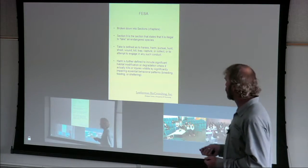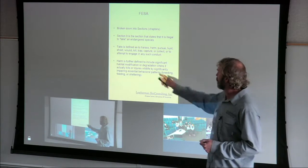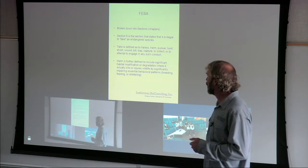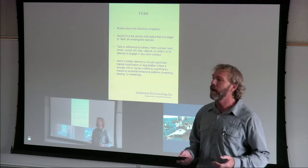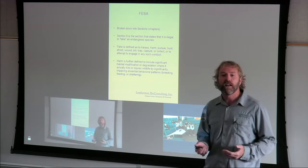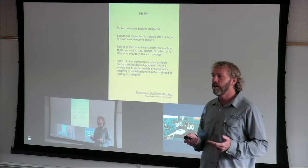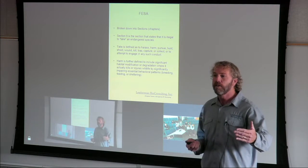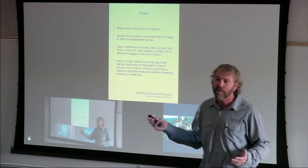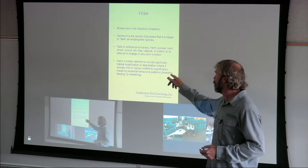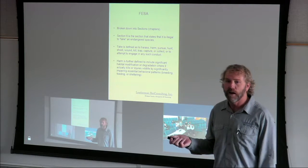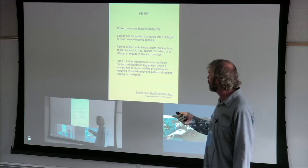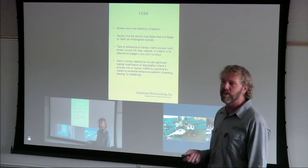Under the Federal ESA, 'harm' is further defined to include significant habitat modification of an endangered species such that it significantly impairs essential behaviors needed to survive. This means if there's an endangered migratory bird in South America for the winter, you can't mow down all its habitat just because it's not here — because when it comes back, the habitat will be gone. By defining harm to include significant habitat modification, the law protects endangered species even when they're not physically present.